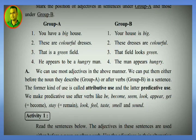Group B example: 'These dresses are colorful.' Here 'dresses' is the noun and the adjective 'colorful' comes after it. So in Group A, the adjective comes before the noun. In Group B, the adjective comes after the noun. Number three: 'That is a green field.' Here 'field' is the noun and 'green' is the adjective placed before it.